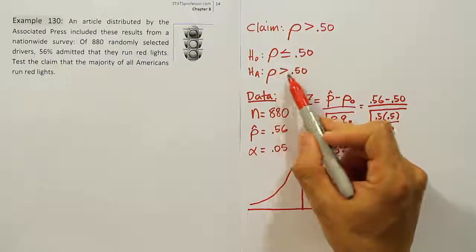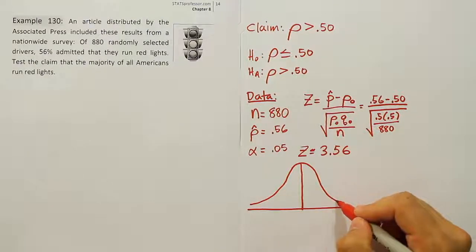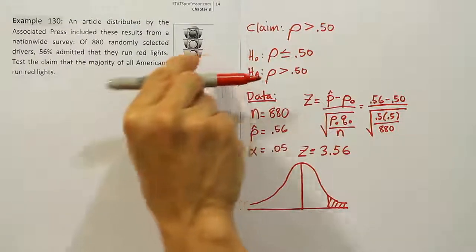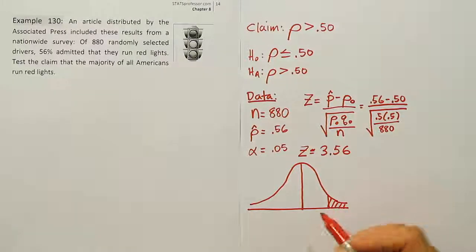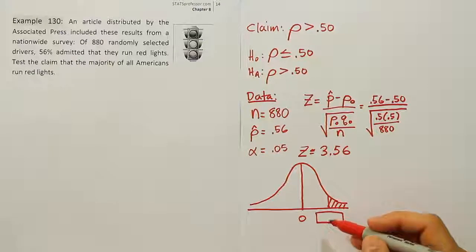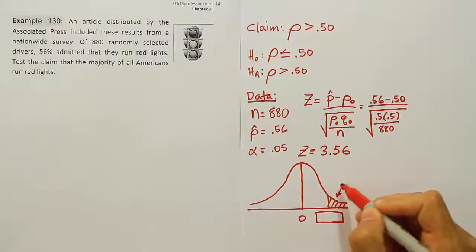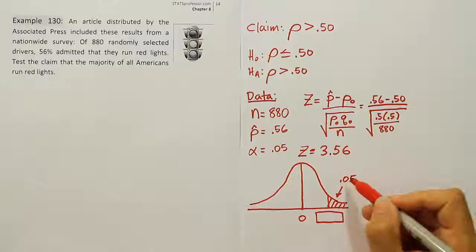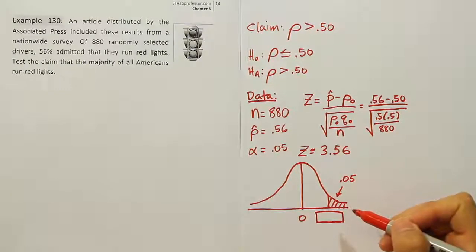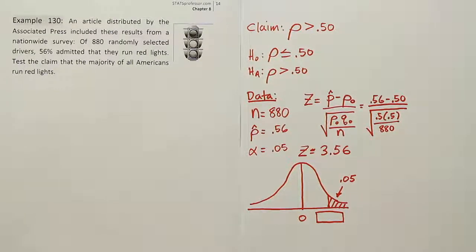Greater than is like an arrow pointing to the right, indicating a right-tailed test. We need to find the critical value. Alpha is 0.05, so we're looking at 5% in one tail on the t-chart. We go all the way to the bottom where the z-values are located.